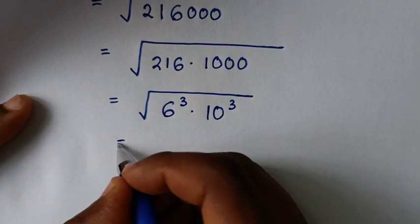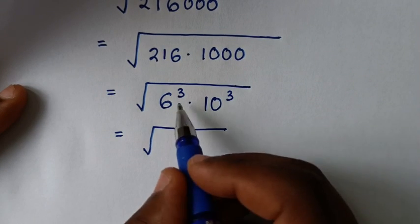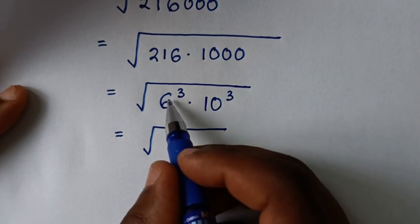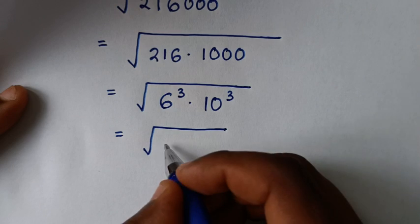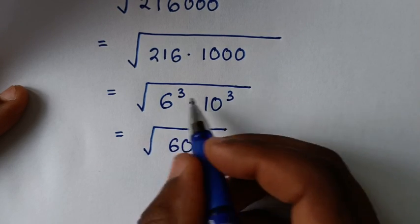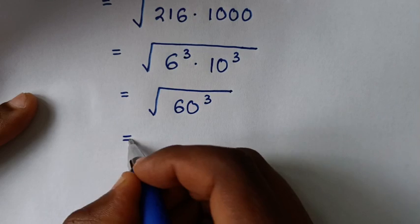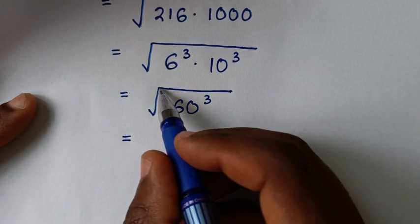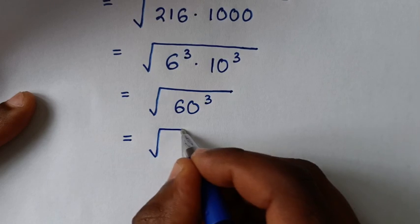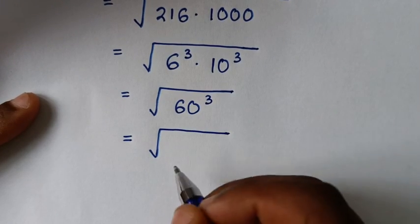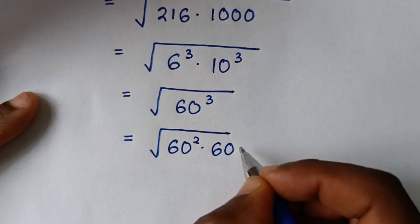So it will be equal to the square root of 216 times 1000, where 216 is the same as 6 to the power 3 and 1000 is the same as 10 to the power 3. Since the power of 3 is common, we multiply the bases: 6 times 10 is 60. So it becomes the square root of 60 to the power 3.